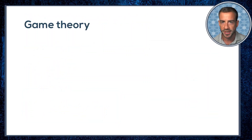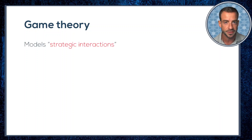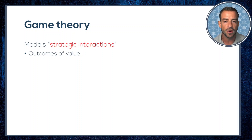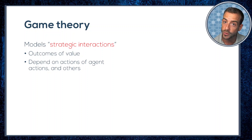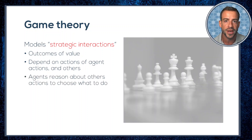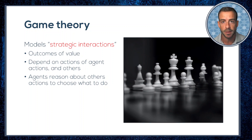In case you're not already familiar with it, game theory is a mathematical discipline that models so-called strategic interactions. These are economic situations where there are outcomes of value to some agents, but where those outcomes don't just depend on what a given agent does by themselves, but on what the others do as well. In addition, the agents are able to reason about the actions that others are going to take in order to choose how they are going to behave. These situations are commonly found in games we've created for our own entertainment — and that's where the name game theory comes from.